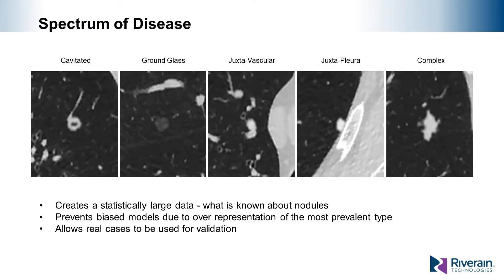At River Rain, we chose to use simulated data to train the ClearRead applications. In the context of training AI, there are many motivating factors for using simulation. We can digitally replicate a wide range of disease types by utilizing existing clinical knowledge, allowing for the creation of large amounts of statistically significant data, which removes the potential for gaps and bias that exist with real data collection. Another benefit is that all actual cases can be used for validation, unlike the small chosen set used when training with real data. The goal is to capture the spectrum of disease to ensure broad statistical coverage.